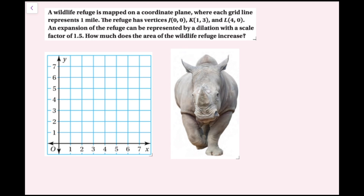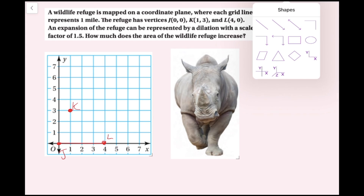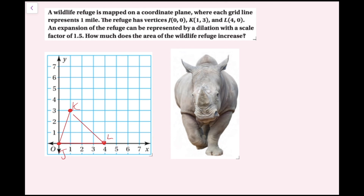For example five, a wildlife refuge is mapped on a coordinate plane where each grid line represents one mile. The refuge has vertices j(0, 0), k(1, 3), and l(4, 0). An expansion of the refuge can be represented by a dilation with a scale factor of 1.5. I'll plot the original wildlife refuge and then dilate it.